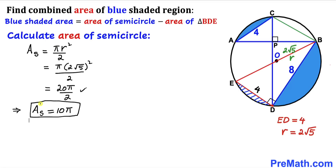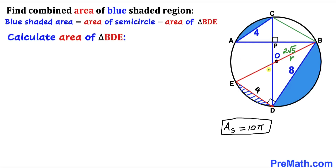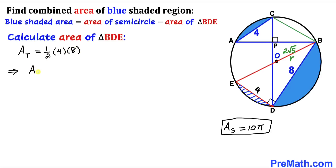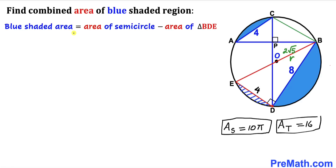Now let's calculate the area of right triangle BDE. Using the formula: area = ½ × base × height. In our case the base is 4 and the height is 8. Therefore the area of triangle BDE = ½ × 4 × 8 = 16.